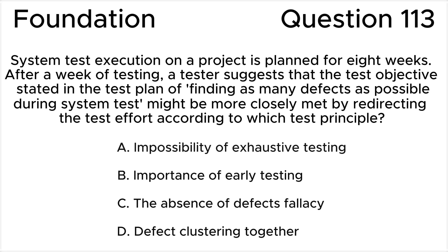ISTQB Foundation Level, version 1.13. System test execution on the project is planned for eight weeks. After a week of testing, a tester suggests that the test objective stated in the test plan — finding as many defects as possible during system testing — might be more closely met by redirecting the test efforts. According to which test principle? A: impossibility of exhaustive testing. B: the importance of early testing. C: the absence of defects fallacy.